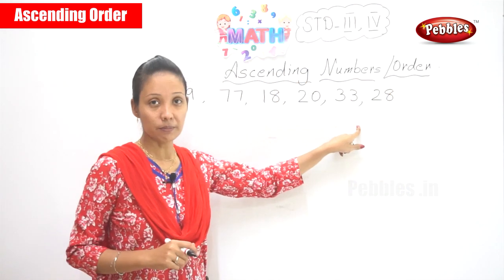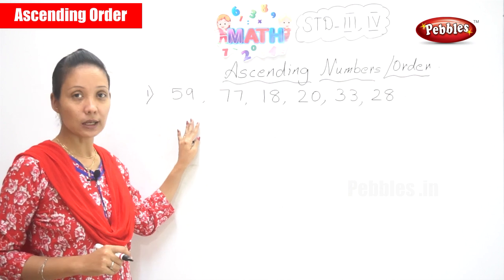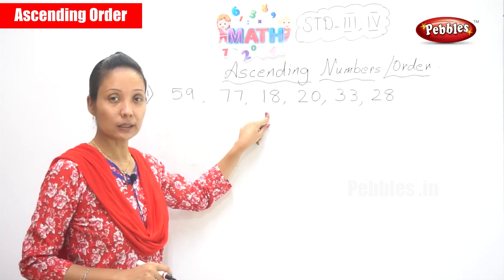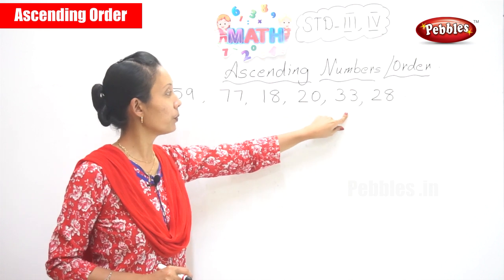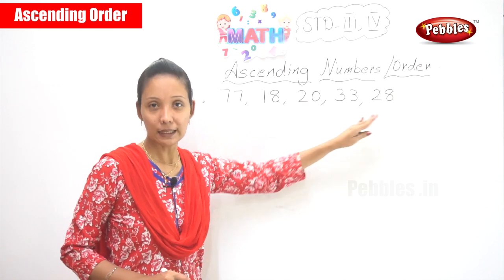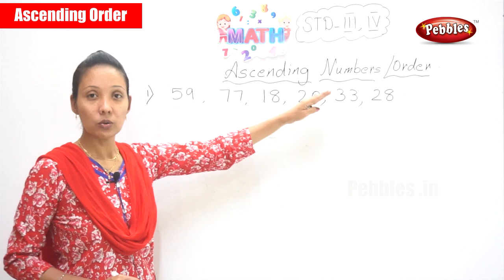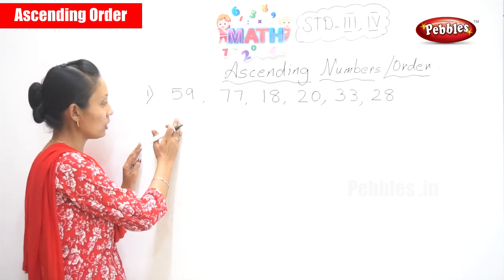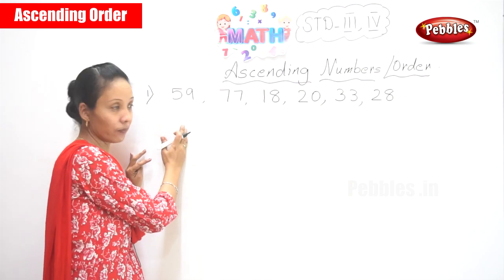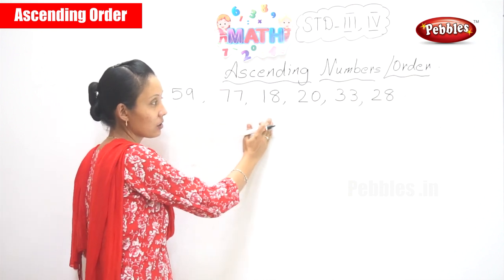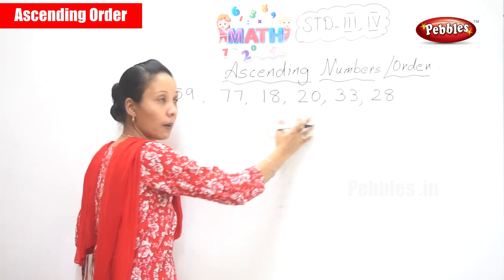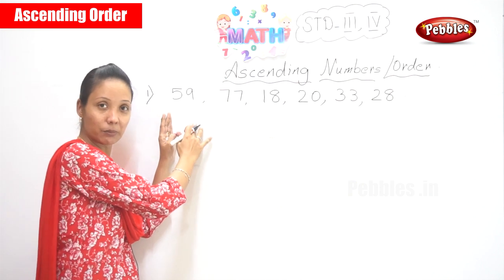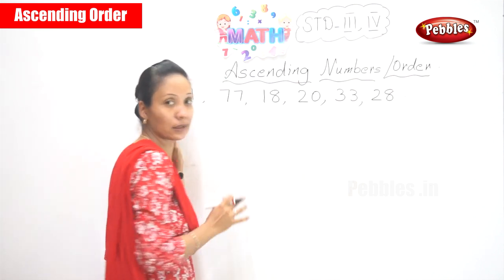Now you have some numbers over here: 90, 78, 18, 20, 33, 28. What is the meaning of ascending order? First you need to write the smallest number, then the next one, so as it goes it is from small to the big.